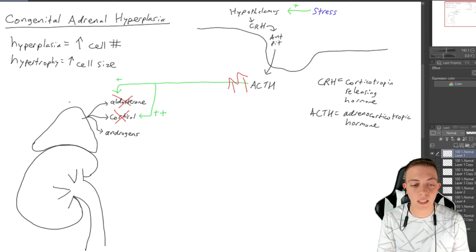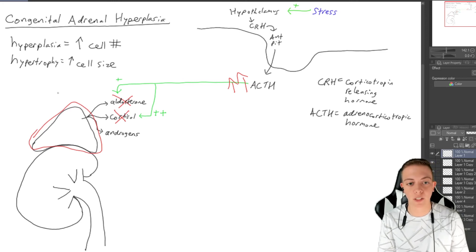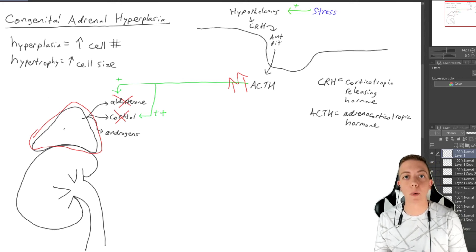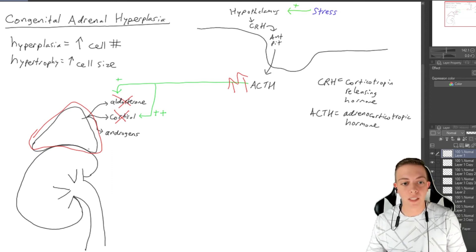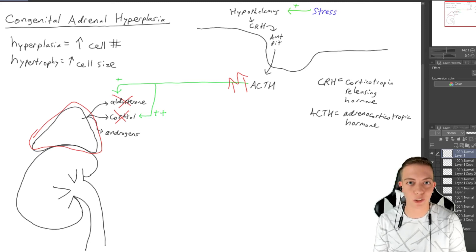That is going to then stimulate the adrenal cortex to grow. We're going to get hyperplasia because we're going to get cells that are going to grow because we need to keep up with this demand of aldosterone and cortisol in the adrenal gland. This is where we get the congenital adrenal hyperplasia.